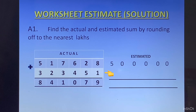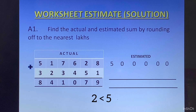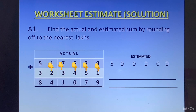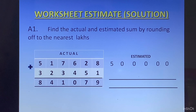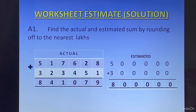The second number is 323451. To round it off to the nearest lakhs place, we will look at the digit at the 10,000 place, which is 2. Since 2 is less than 5, we will not change the digit at the lakhs place. The remaining digits on the right of the lakhs place will get converted to 0, and we will get the estimated number as 3 lakhs. When we add the two, we will get 8 lakhs.